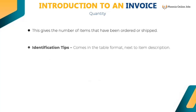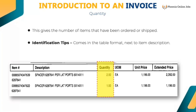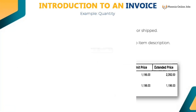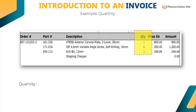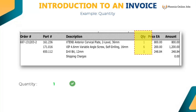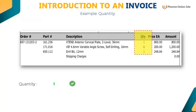Quantity gives the number of items that have been ordered or shipped. It comes in table format, next to item description. Key the number 1 for quantity in the first line. Similarly, key for all other lines as per the image shown in the snippet. Do not key the word 'quantity.' If 'quantity' is already populated, then remove it.